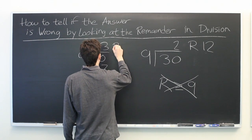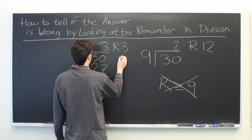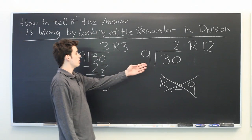That gives us an answer of 3 with a remainder of 3, which if we see here.